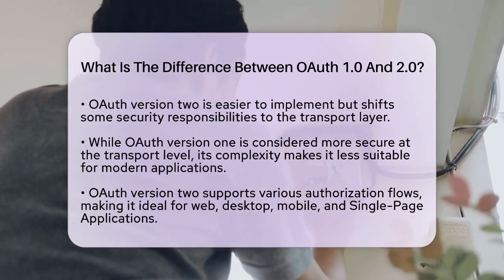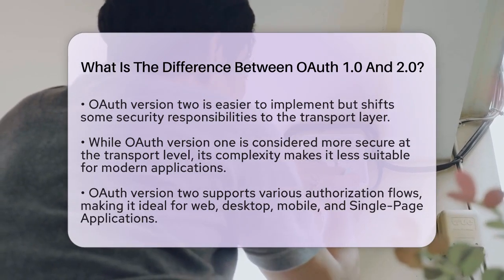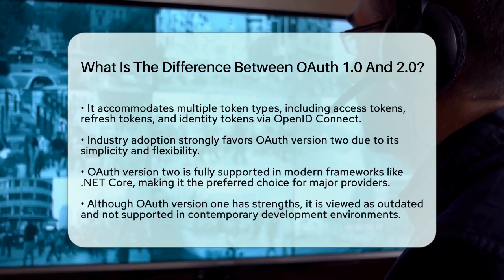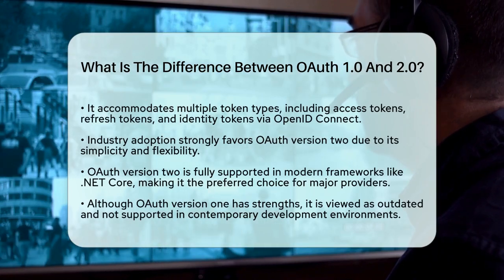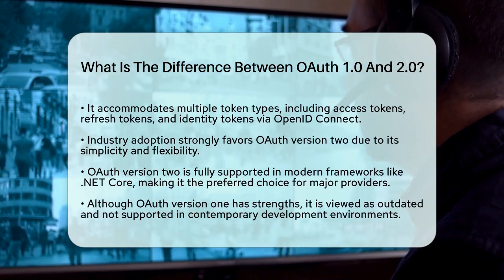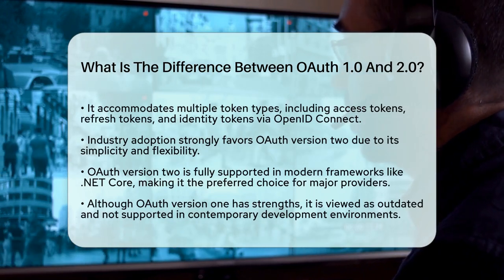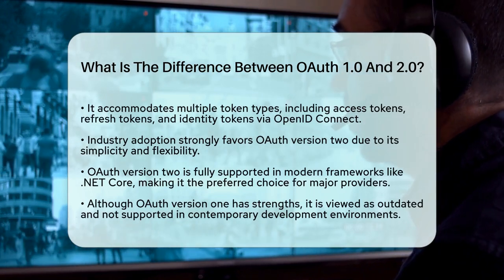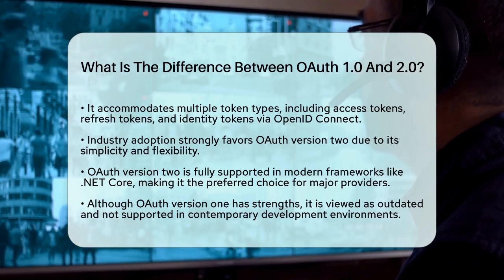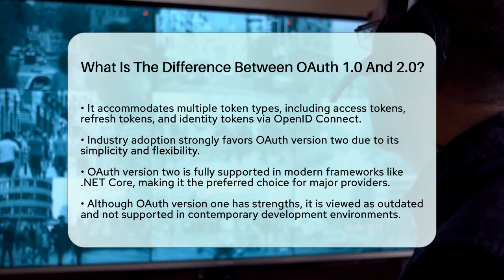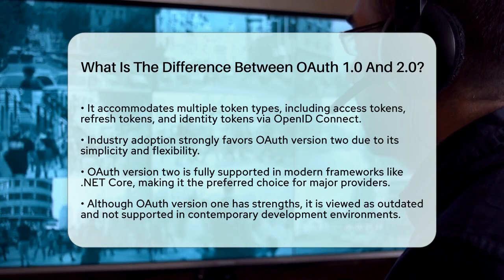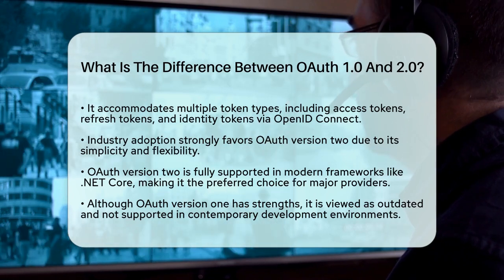Industry adoption clearly favors OAuth Version 2 due to its simplicity and flexibility. It is fully supported in modern frameworks like .NET Core, making it the preferred choice for integrating with major providers such as Google, Facebook, and Microsoft. While OAuth Version 1 has its strengths, it is generally considered outdated and not natively supported in modern development environments.